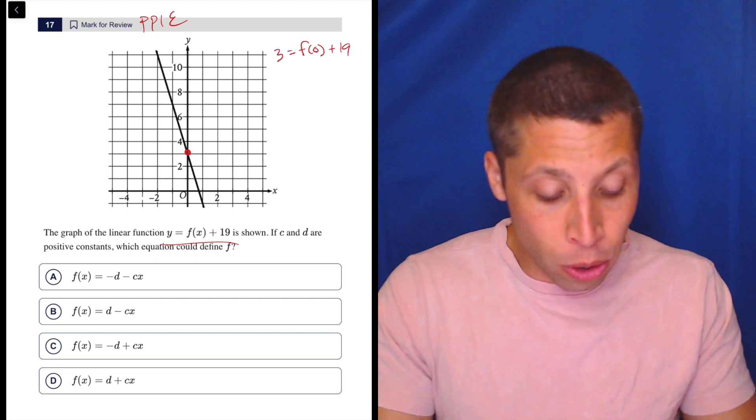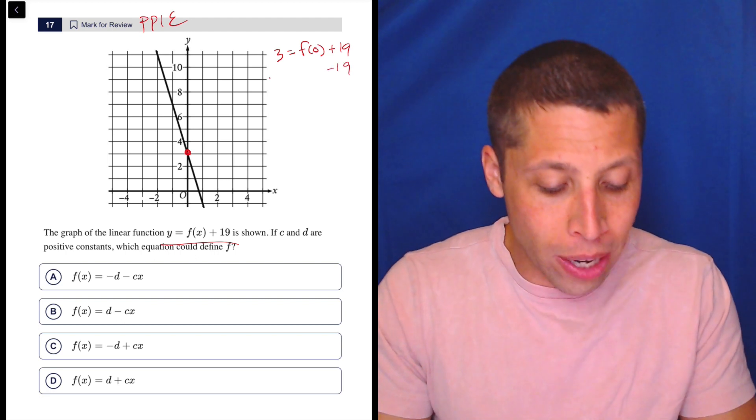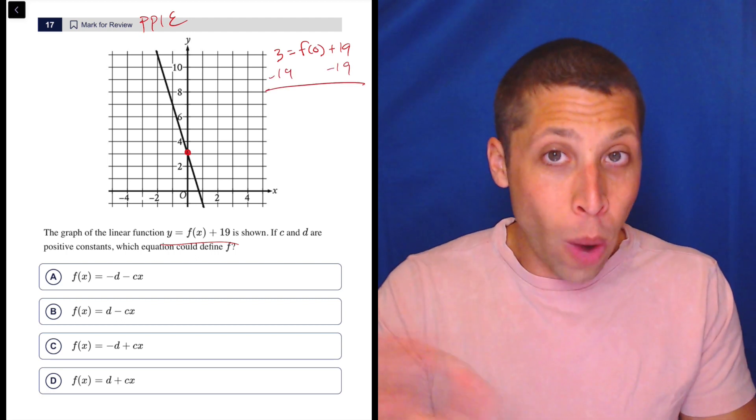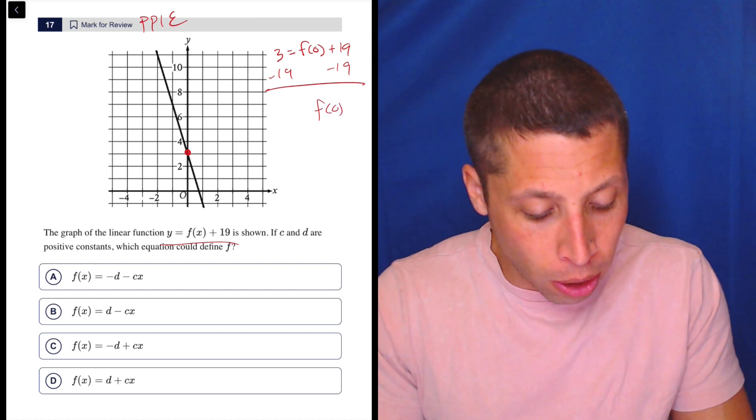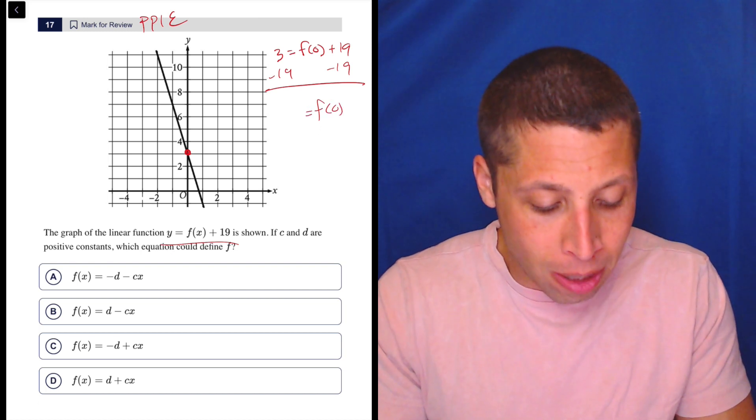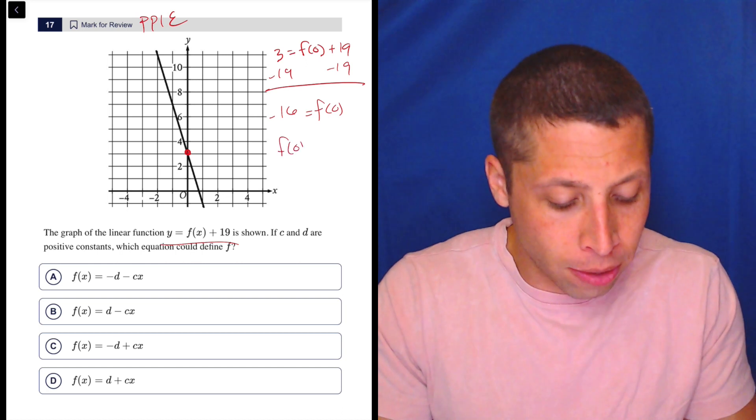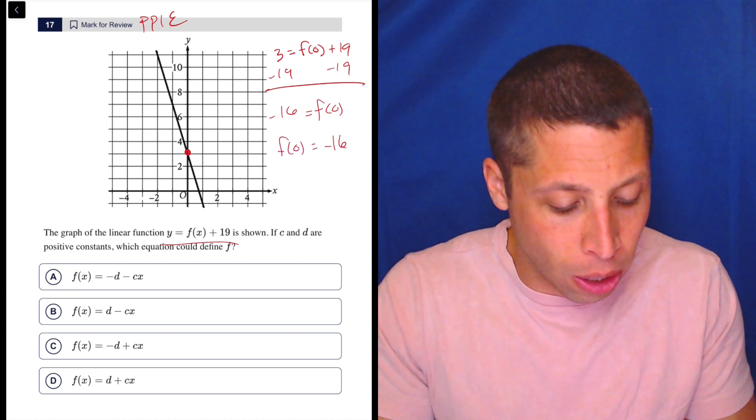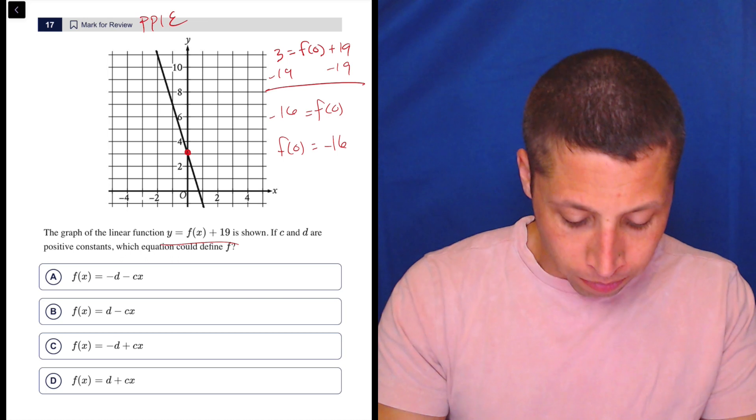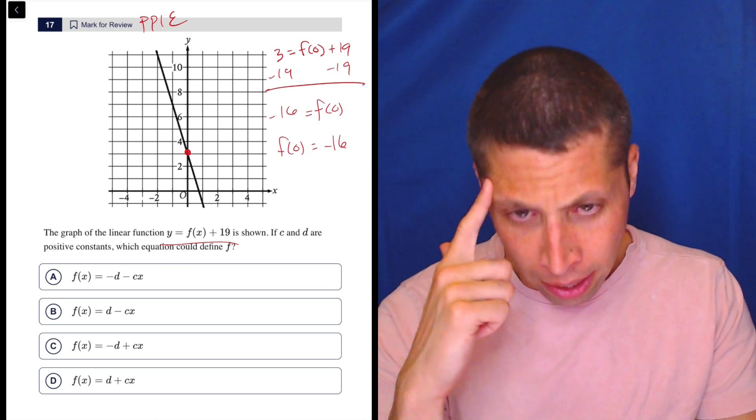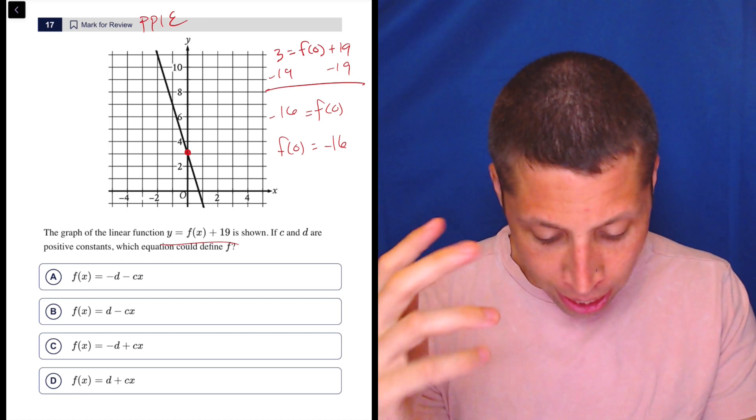So now what that lets me do is I'm not necessarily getting the equation of the line, but when I have F of zero, I now know that I need that to be negative 16. So let's just flip it around so it makes more sense. F of zero is negative 16.